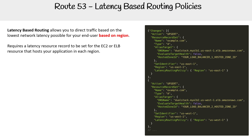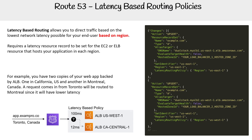The idea is that we would have to have a redundant resource, of course. An example would be that you have two copies of your web app backed by ELB — one in one region, one in another — and it's going to choose where the lowest latency is.